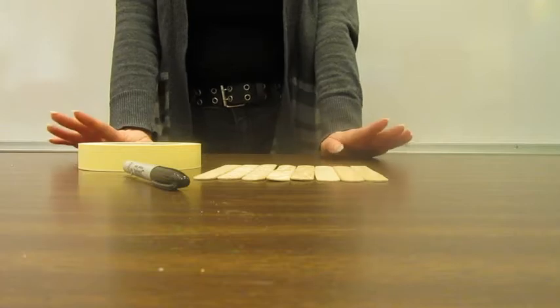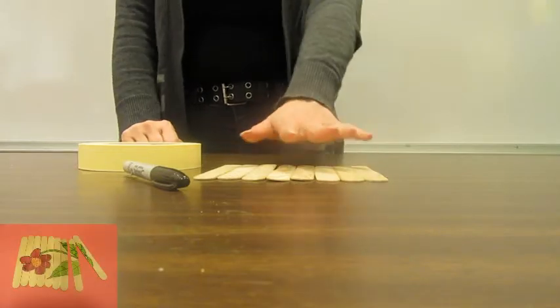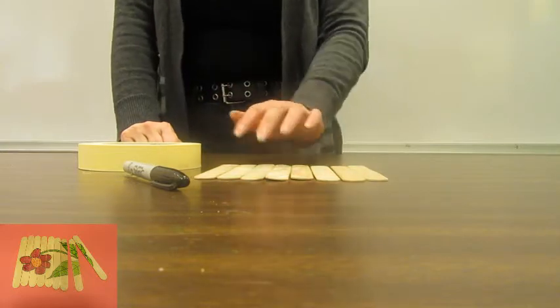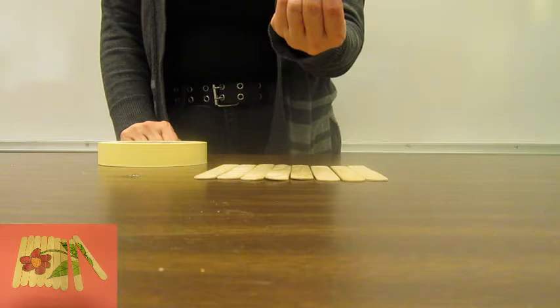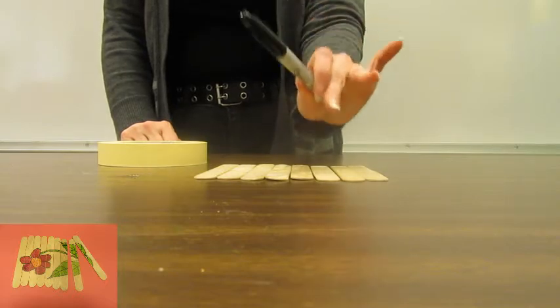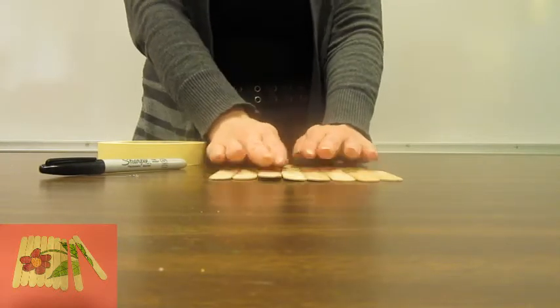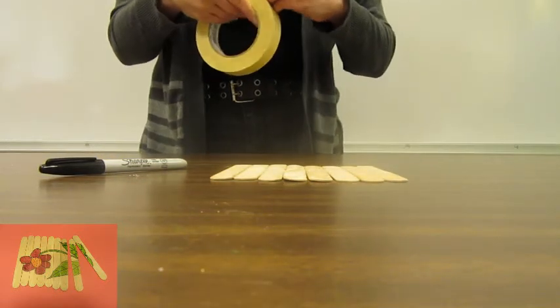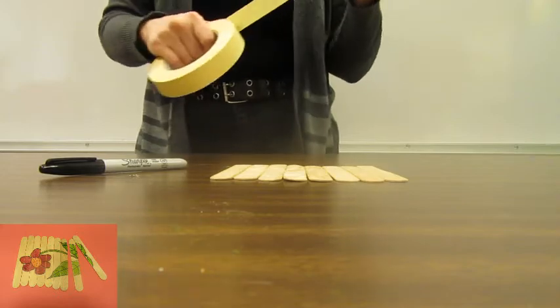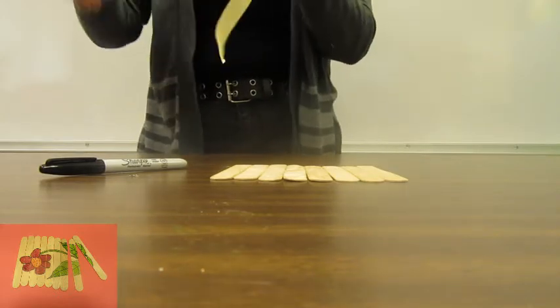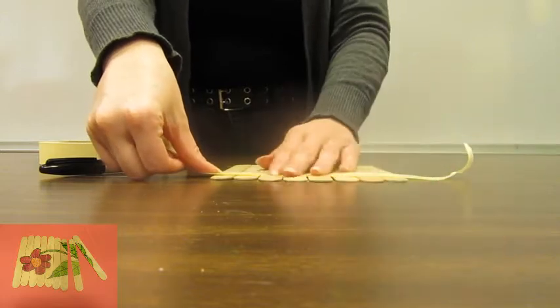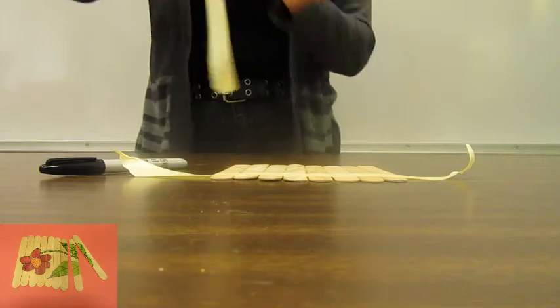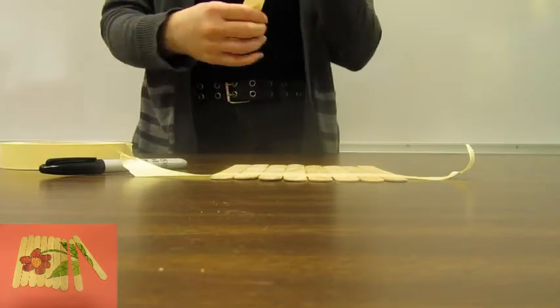Okay. For our next craft, we are going to make a puzzle. For this, you're going to need eight to nine sticks. For this one, I do recommend jumbo sticks, but you can use whatever you like. You'll need some tape and you're going to need something to decorate with. I'm just going to use a pen for this one. So take your sticks and just line them up. Take your tape, and just go ahead and tape it on both ends, just so they're nice and straight and together.